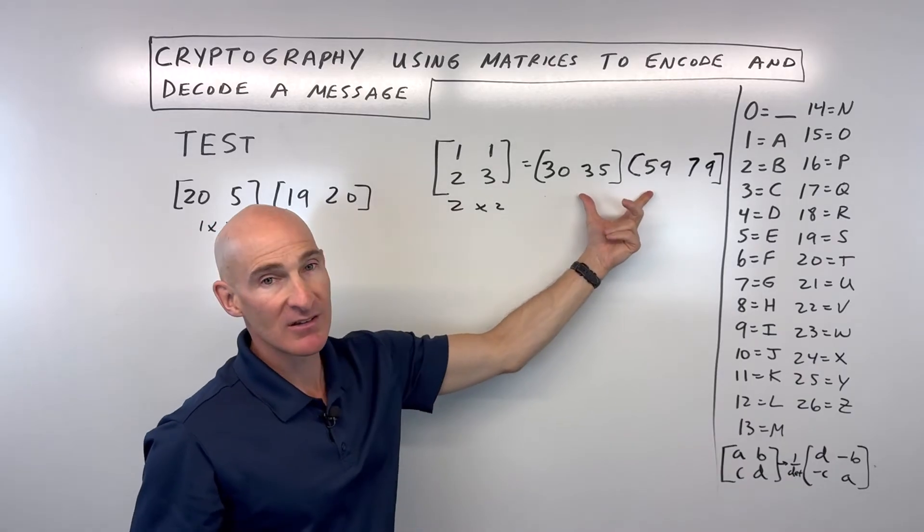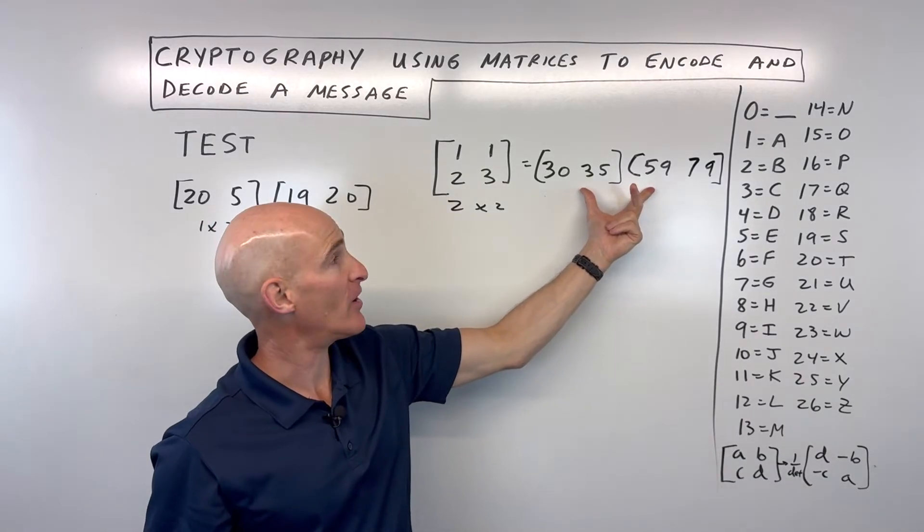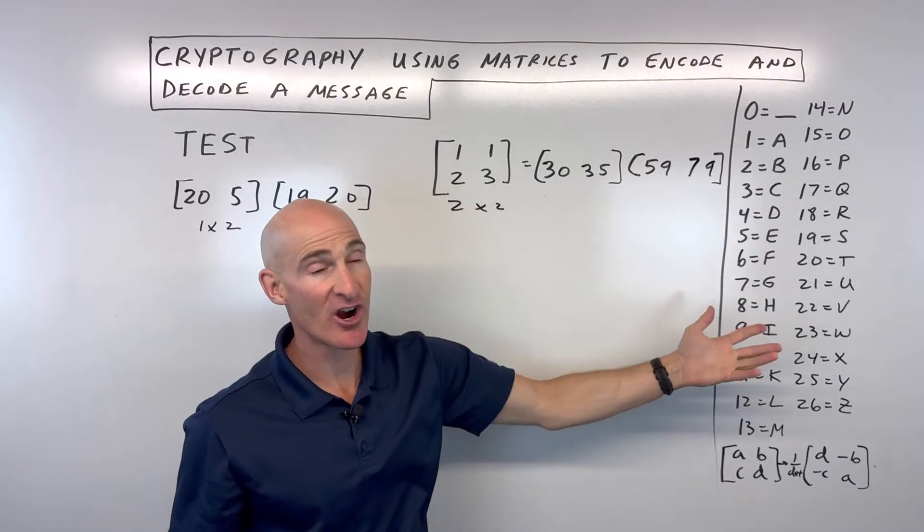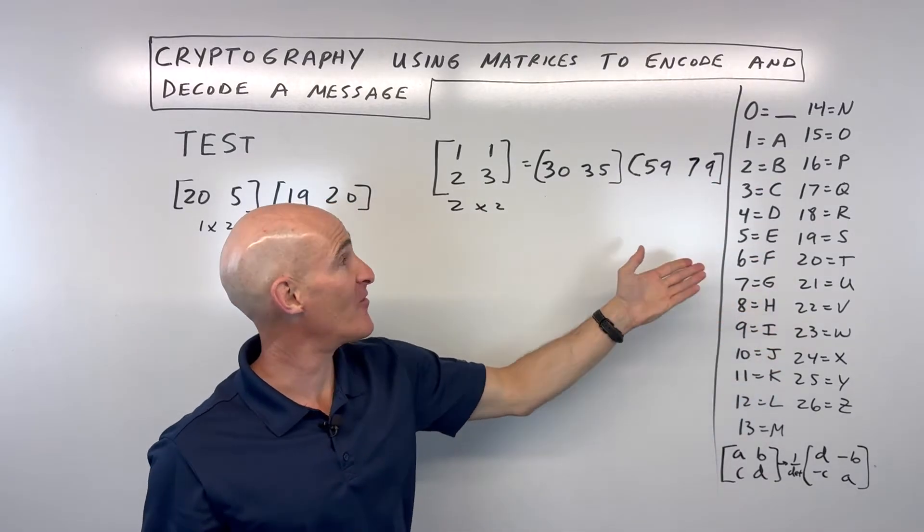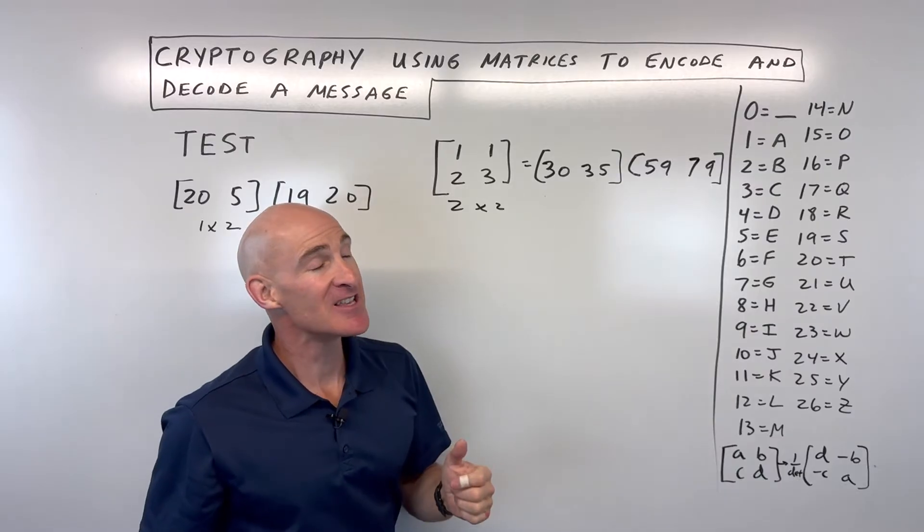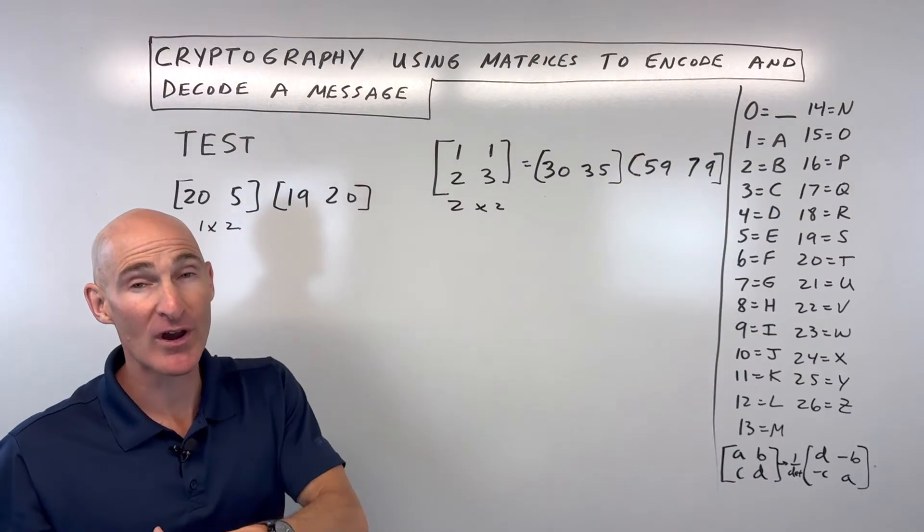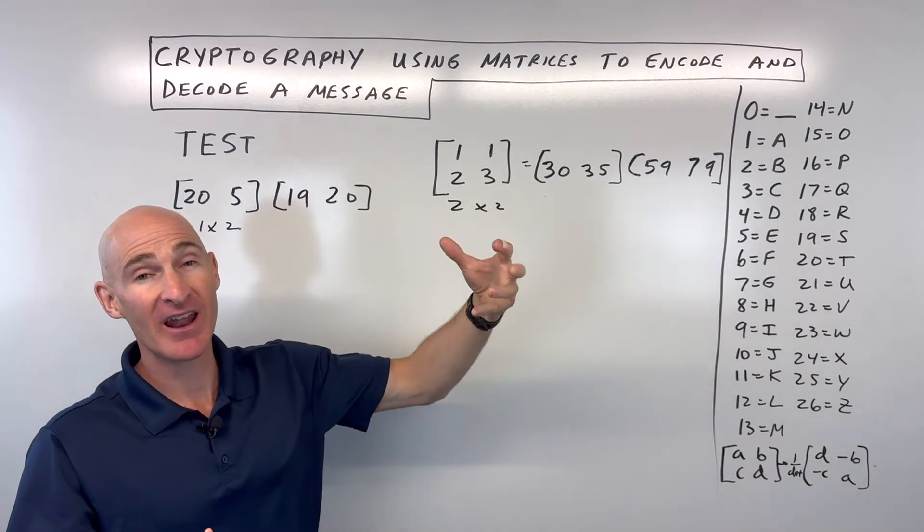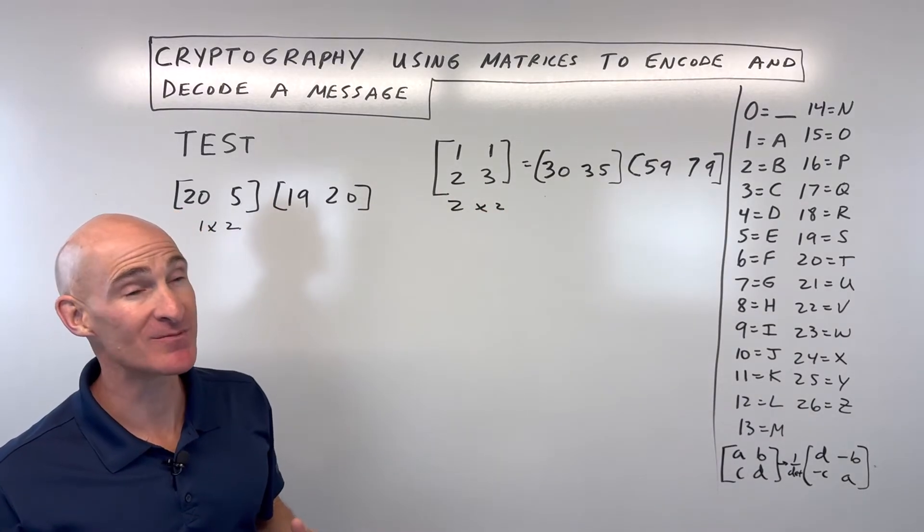So this is the message that you're going to send your friend: 30, 35, 59, 79. Somebody looks at this chart, it means nothing. What are you going to do? That doesn't even say anything. But your friend has to have the matrix that's going to then decode this message.